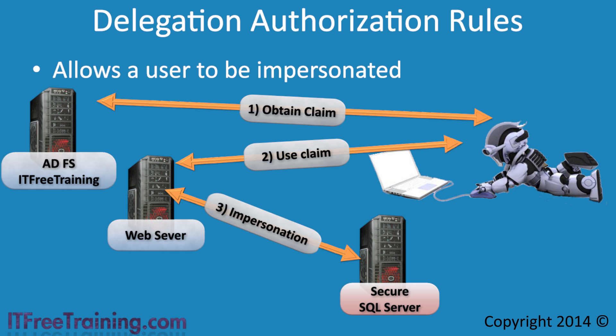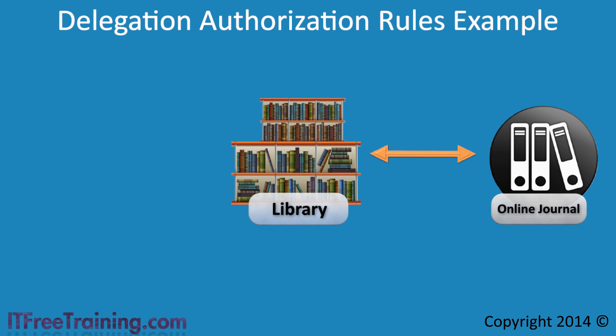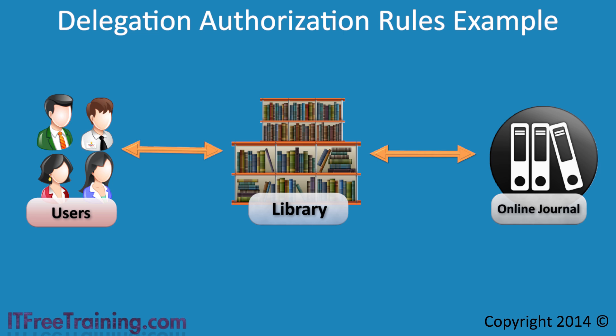To better understand this, consider a real-world example. Consider that you have a library. The library purchases an online subscription to a journal and is now able to access the online journal. The problem is, how does the library allow its users to access the online journal? If they had direct access, the library would no longer have control over who has access — for example, users could give the access to other people, or they could use it even if they stopped being members of the library. To solve this, users access the library server, which will then access the online journal for them. You can see how impersonation works — it is about pretending to be someone else or accessing something on their behalf. Although the online journal would not know who is accessing it, the library could keep records of this access.